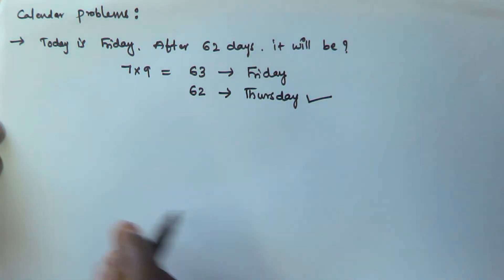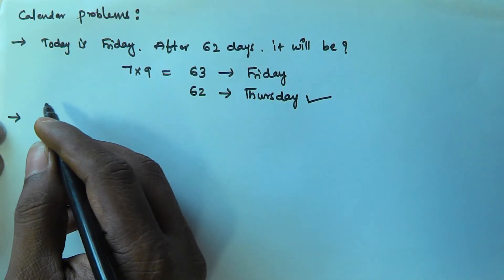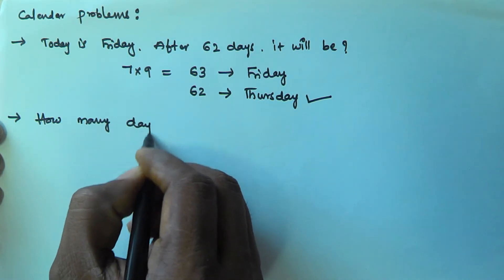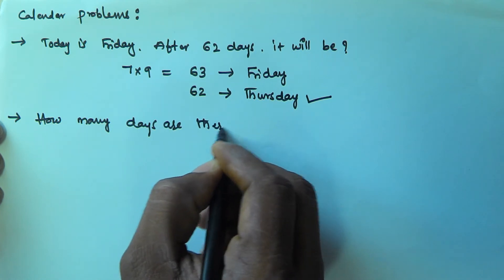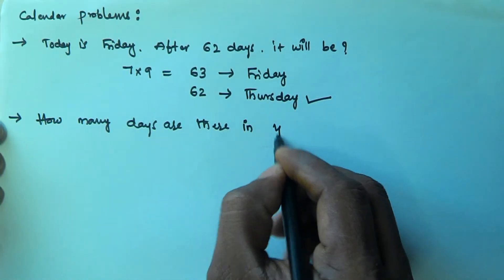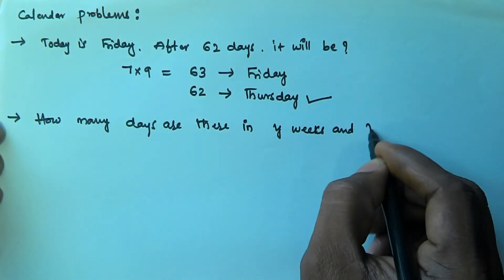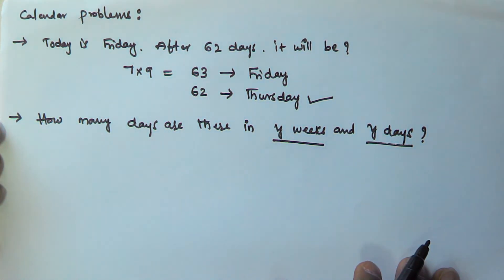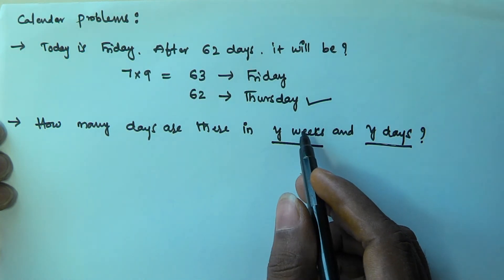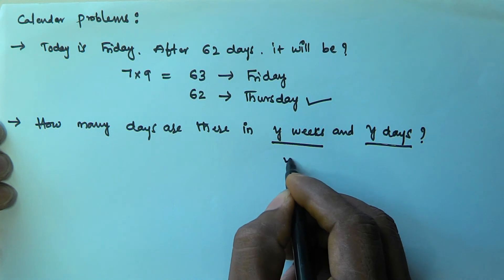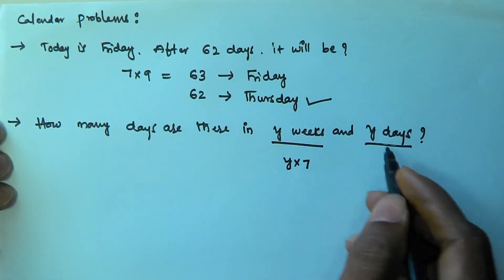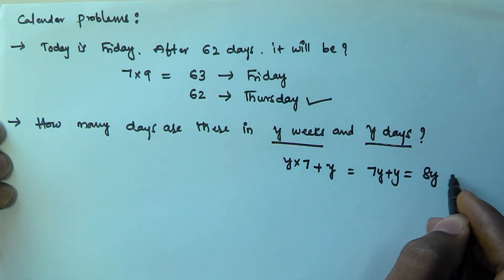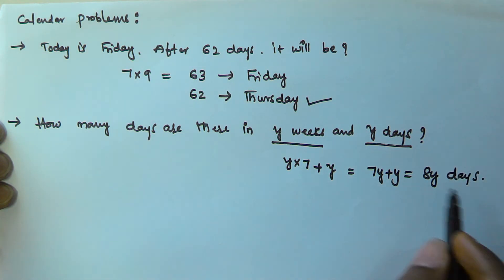Let's see another example problem related to calendars. How many days are there in y weeks and y days? We know each week contains 7 days, so y weeks contain y into 7 days, plus the additional y days. That is going to be equal to 7y plus y, which equals 8y days.